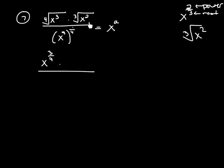Same idea over here — this is going to be your power and this is going to be your root, so this is going to be x to the 2/3 power. Now in the denominator, when you have a power raised to another power, you just multiply these, so 5 times 1/4 would be 5/4. So this is going to be x to the 5/4 power.